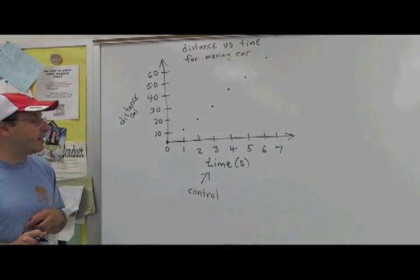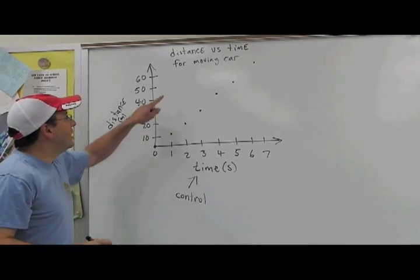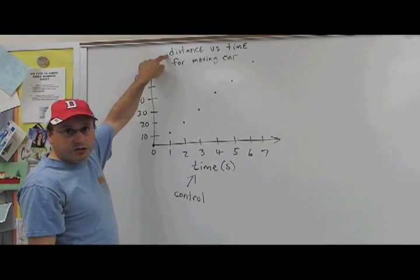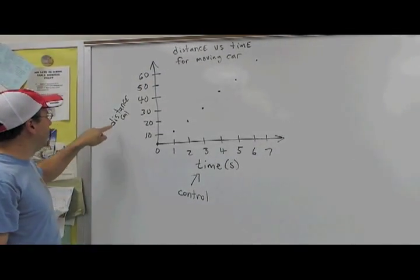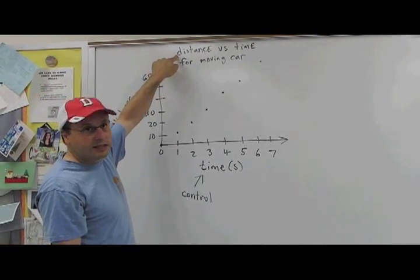You plot your points, you make sure that you have your title, a descriptive title, and the rule is it's the y versus the x. So in this case it's distance versus time for a moving car.